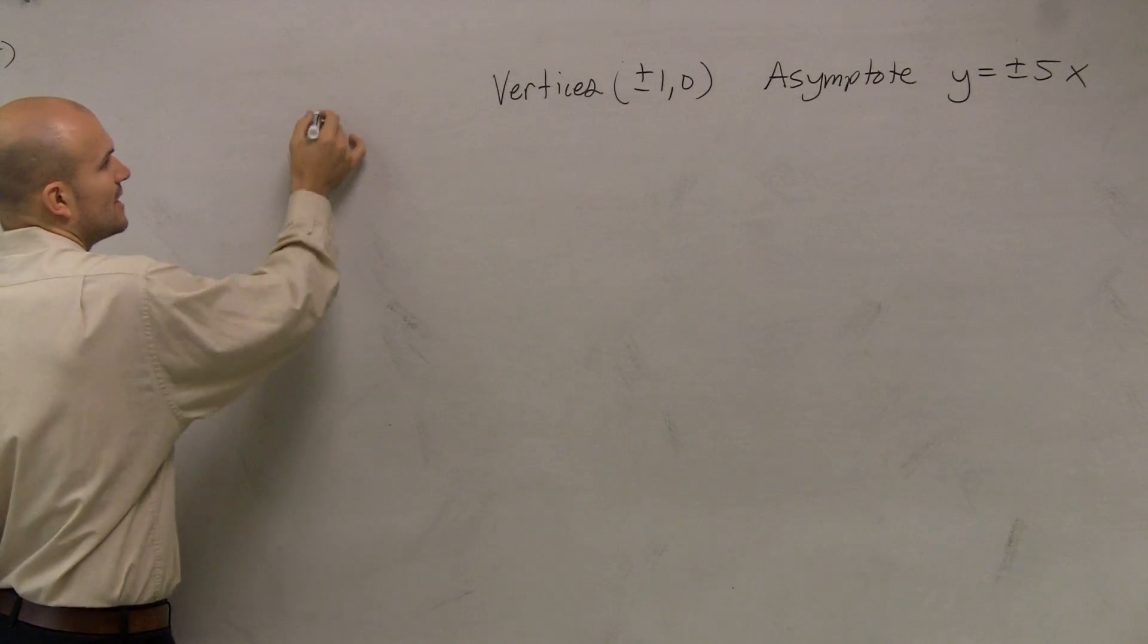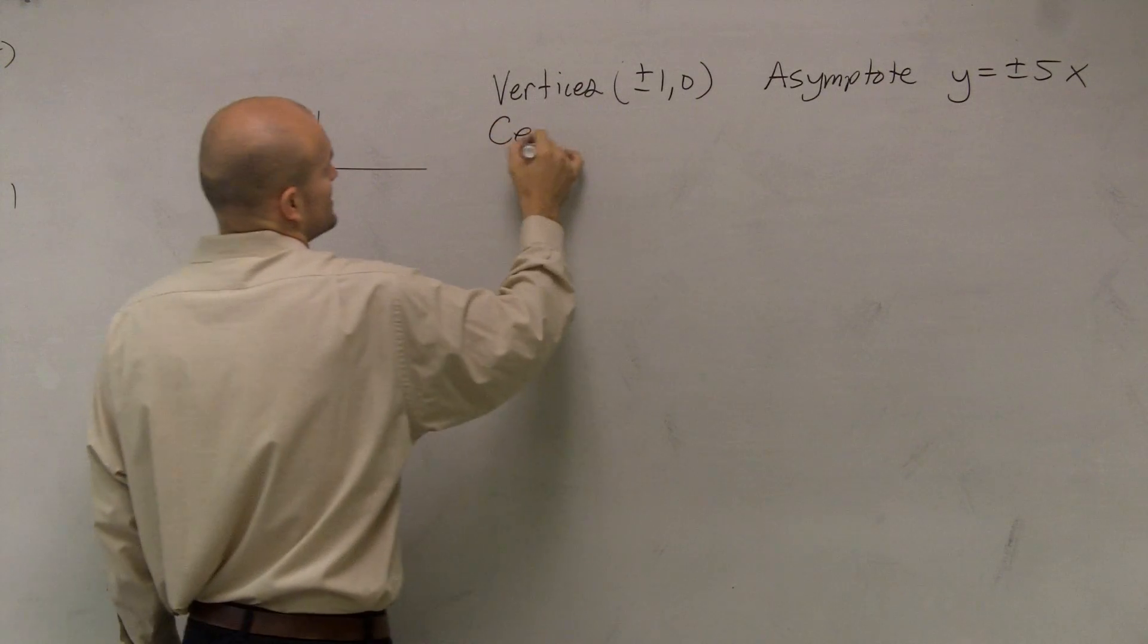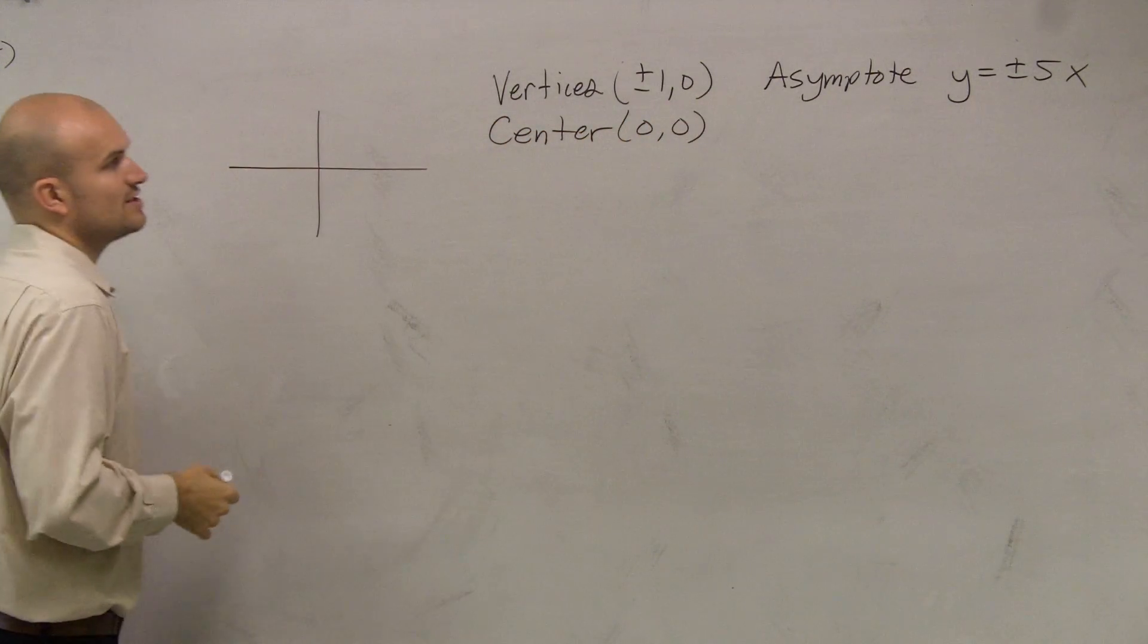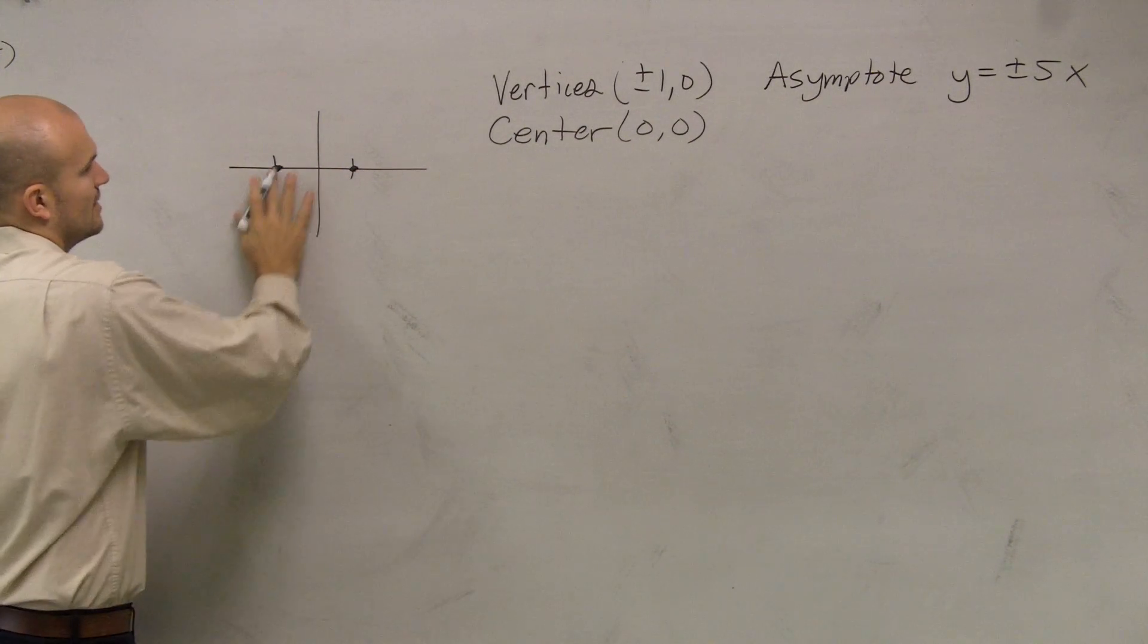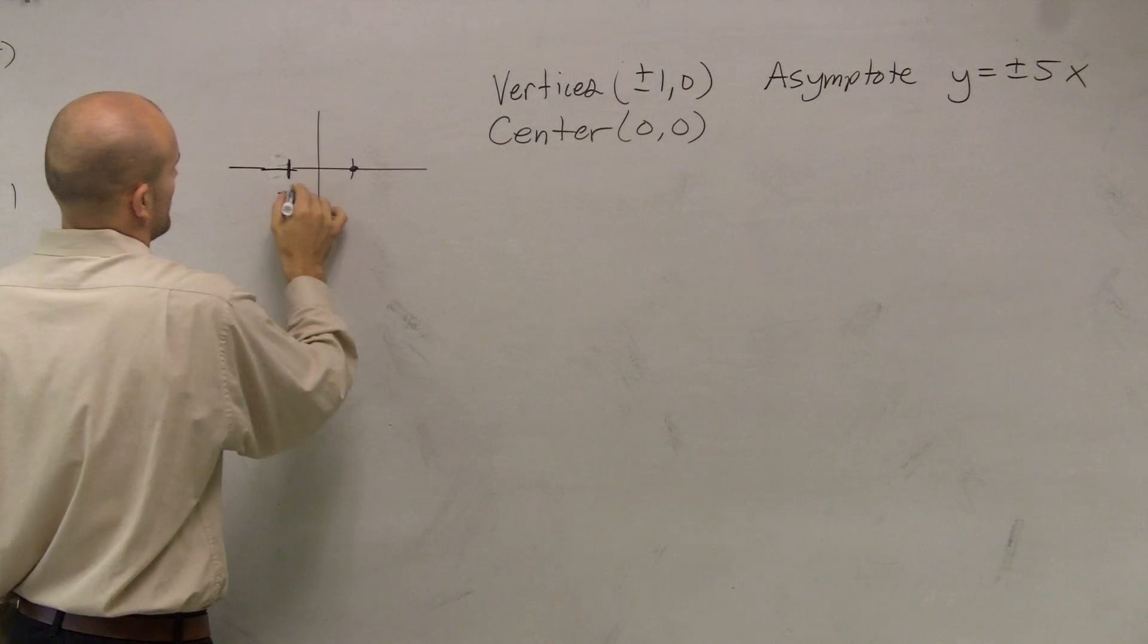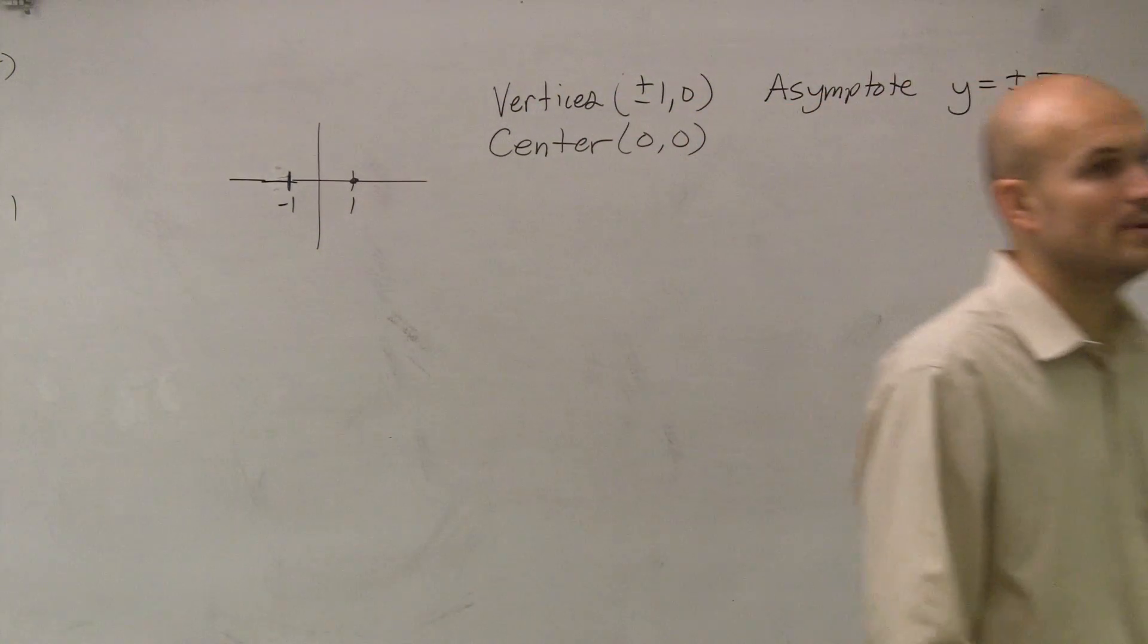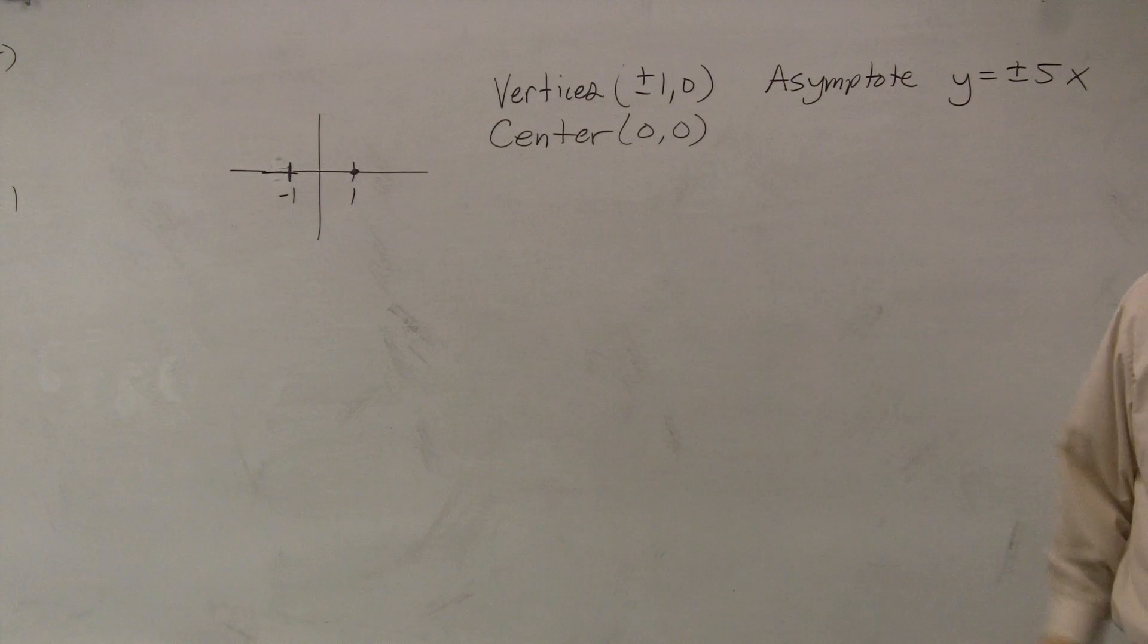So to determine what we need to look at, let's just graph it. I know the center is at (0, 0). So my vertices are at plus 1 and negative 1. That's kind of not really the scale. My vertices are negative 1 and positive 1.